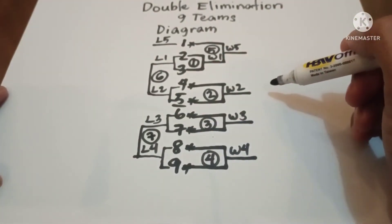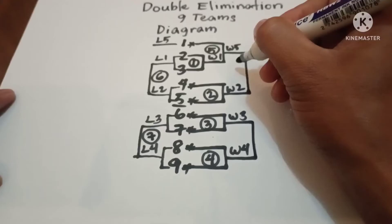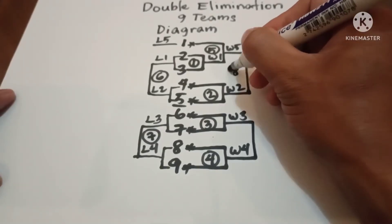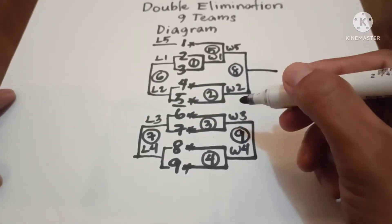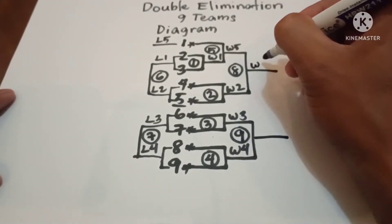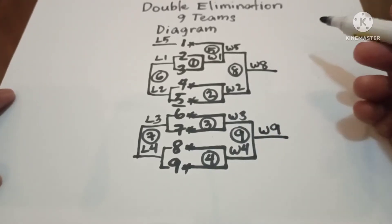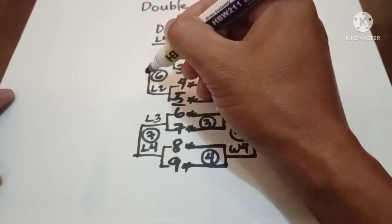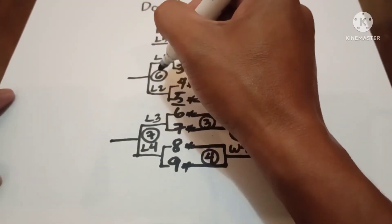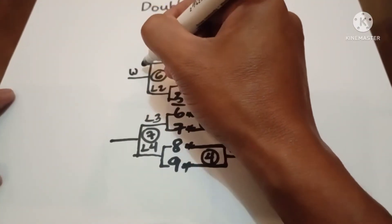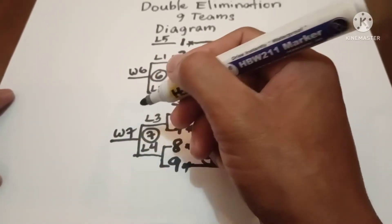Let's proceed to the winners bracket. Game 8 and Game 9 are played, giving us Winner 8 and Winner 9. Now going back to the losers bracket, we add the results: Winner 6 from Game 6 and Winner 7 from Game 7.